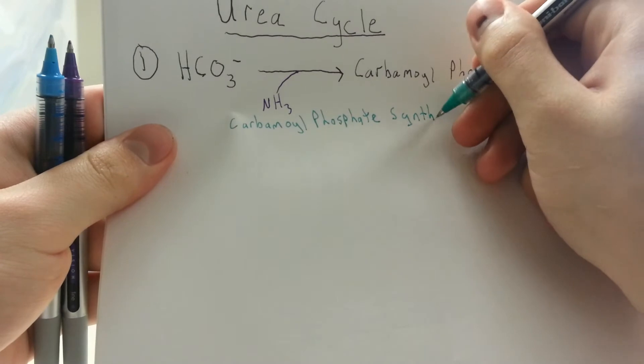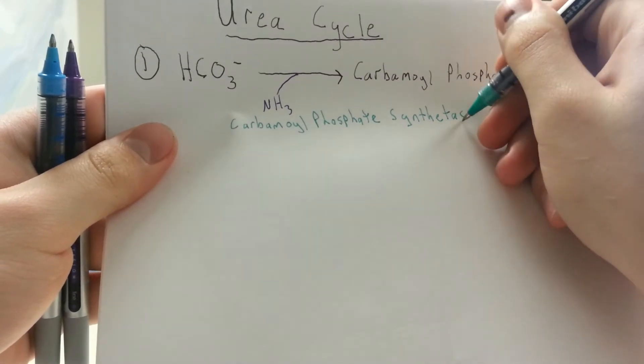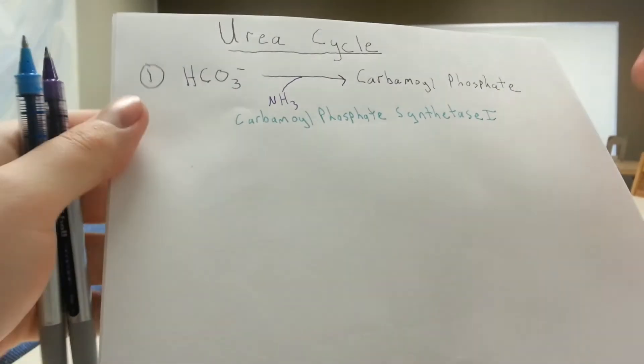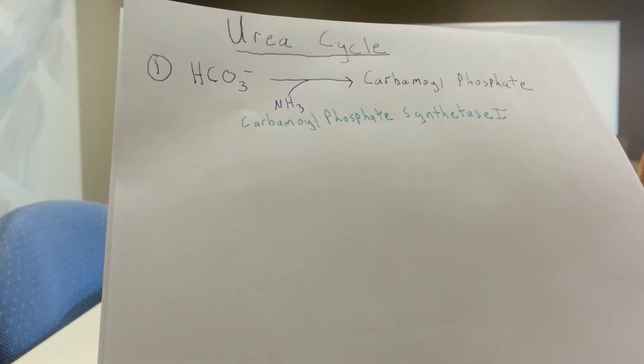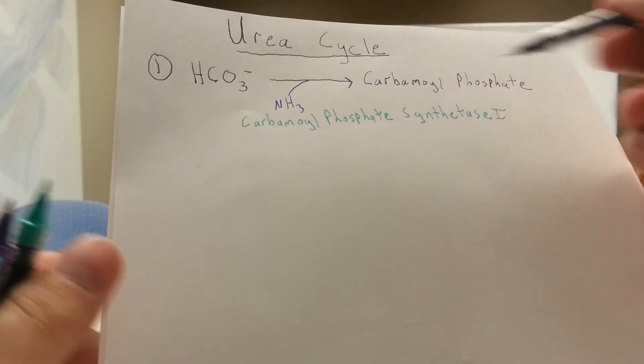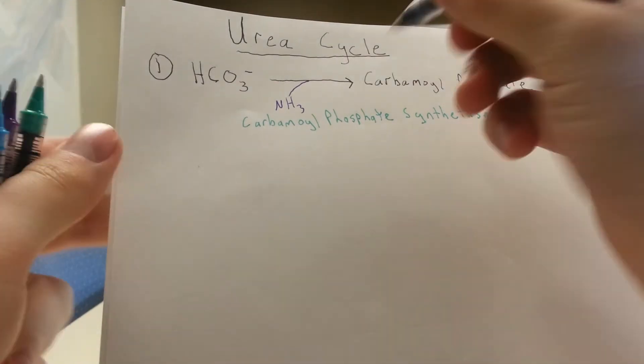And remember the difference between a synthetase and a synthase is just the use of ATP. So if for some reason you do get a question on whether or not ATP is involved, you can just remember it based off the name of the enzyme, synthetase. Now this is just the activating step to get this carbamoyl phosphate, but this actually isn't part of the cycle, the cyclic part of it yet.